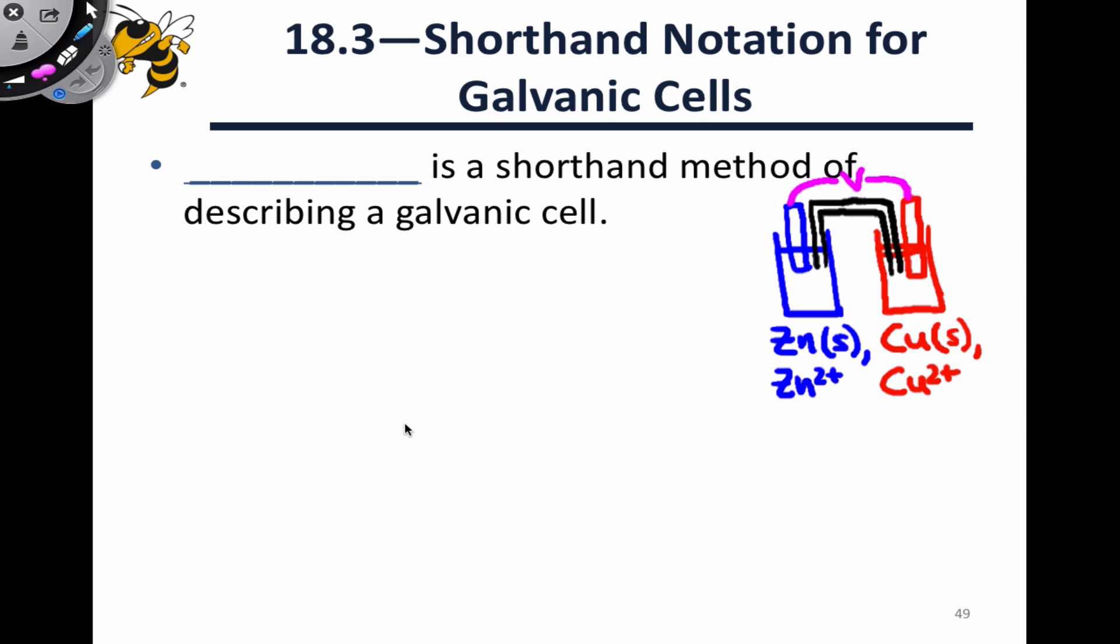Drawing galvanic cell images like the one you see on the right-hand side of this slide is fairly complicated. We have to worry about the structure of each electrode in terms of the metal solid and any metal cations. We have to draw in the salt bridge, which is in black here, and the wire connecting the two electrodes, which I've drawn here in pink.